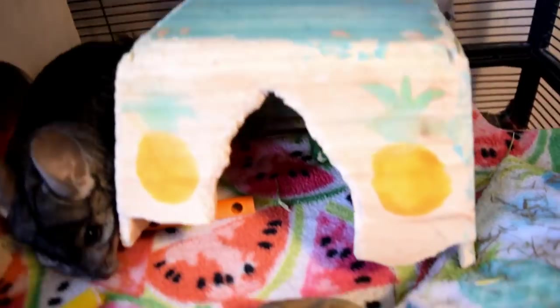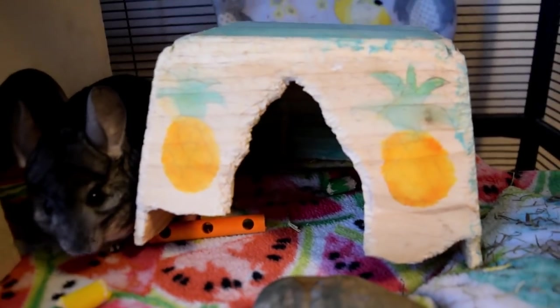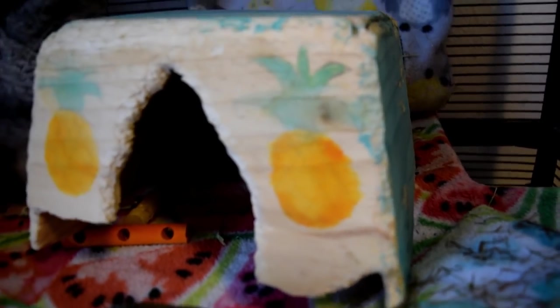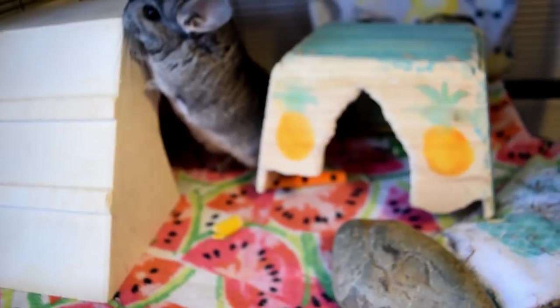I've actually done this before with the hut. So as you can see, this is one of Merlin's older huts and I don't use it anymore because he chewed it up pretty bad. But over here I just put some pineapples on and then I painted the top and then the side blue and then I also have like a little flower on the side there.